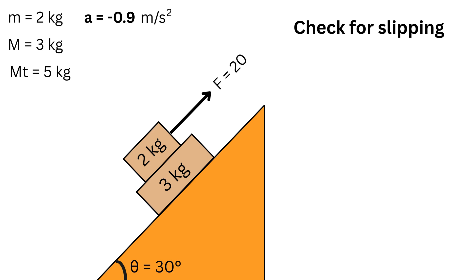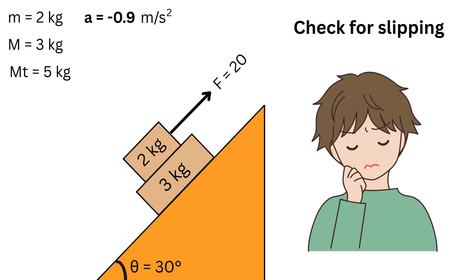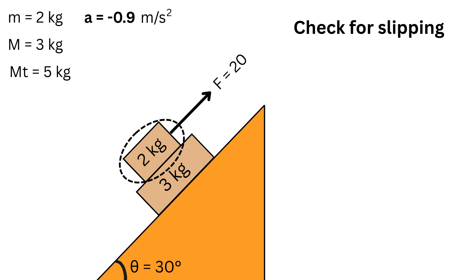But now we will check the conditions for slipping. This is where the real understanding of your theoretical concept will be tested. We will zoom in on the small 2 kg top block and ask, how much friction is required from the bottom big block to keep the small block accelerating at that common rate of minus 0.9 meters per second squared? We will label it as f_R.